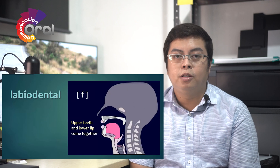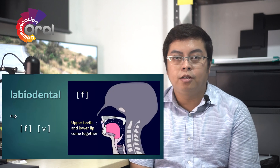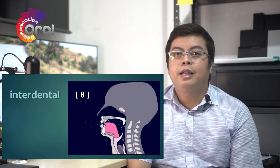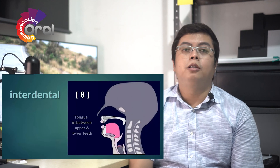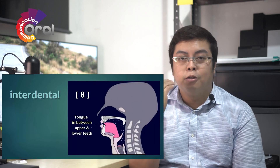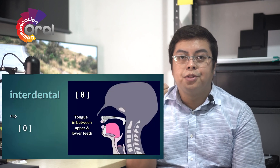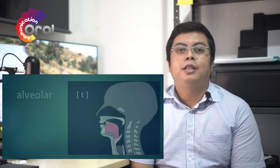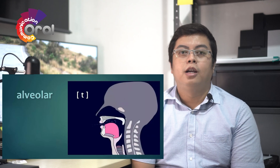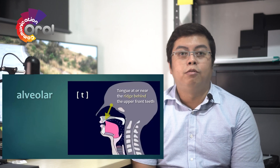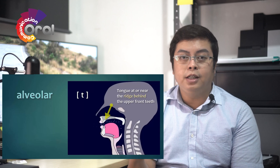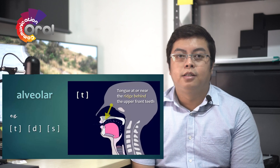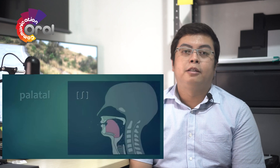Labiodental sounds are produced with the upper teeth and lower lip together. Interdental sounds are produced with the tongue placed in between the upper and lower teeth. Alveolar sounds are produced with the tongue at or near the ridge right behind the upper front teeth.